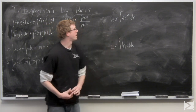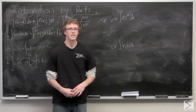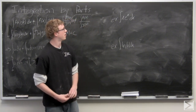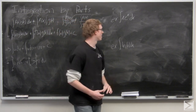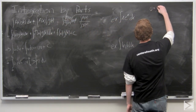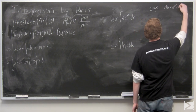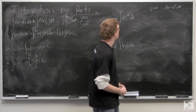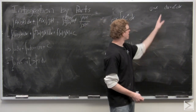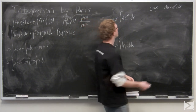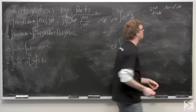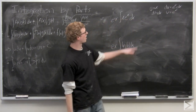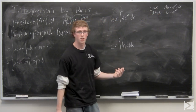For the first example, the best choice is to set dv equal to eˣ dx, because the antiderivative of eˣ is just eˣ. So dv equals eˣ dx and v equals eˣ. To get the other side of the integration by parts formula, we differentiate u and take the antiderivative of dv. We have v equals eˣ, so now we have our u dv and just need to set up the other side of the equation.